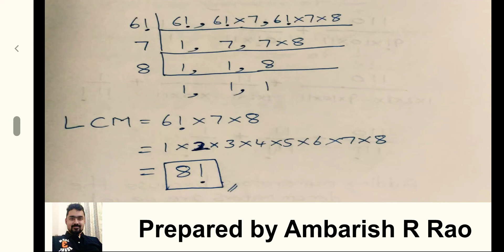Now let us factor out 6 factorial, then 7, then 8. In the end we are left with 1 comma 1 comma 1.